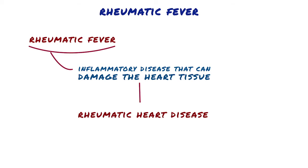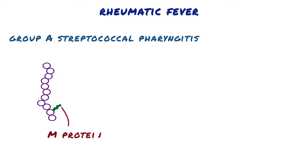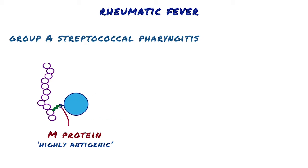Rheumatic fever classically occurs a few weeks after an episode of group A streptococcal pharyngitis, which means inflammation of the pharynx, which is in the back of the throat. Some of these streptococcal bacteria have a protein on their cell wall called M-protein, and this particular protein is highly antigenic, meaning that the immune system recognizes it as a foreign molecule and mounts an immune response, which rightfully produces antibodies against these proteins.